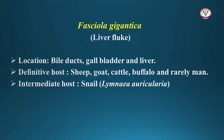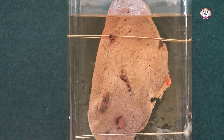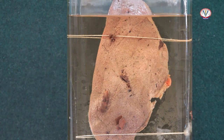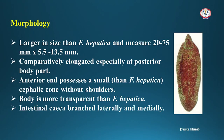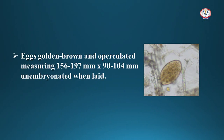Fasciola gigantica, the liver fluke, is present in the bile duct, gallbladder, and liver of cattle, sheep, goat, buffalo, and even man. The intermediate host is Lymnaea auricularia. It is larger than Fasciola hepatica and comparatively elongated in shape, particularly the posterior part of the body. The anterior end possesses a smaller cephalic cone and shoulders are absent. The body is more transparent than Fasciola hepatica. The intestinal caeca are branched laterally as well as medially. Eggs are golden brown, operculated, and unembryonated when laid.